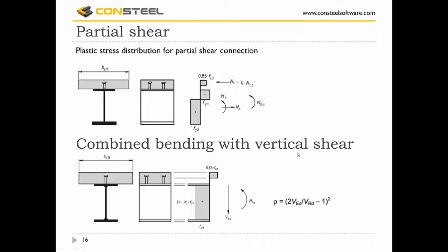Next is combined bending with vertical shear. When the vertical shear force exceeds half the vertical shear resistance, an allowance for its effect on the resistance moment is required. For class 1 and class 2 cross-sections, the influence of vertical shear on bending resistance is accounted for by a reduced steel design strength for the shear area — that is, the web section — using a reduction factor on the yield stress.